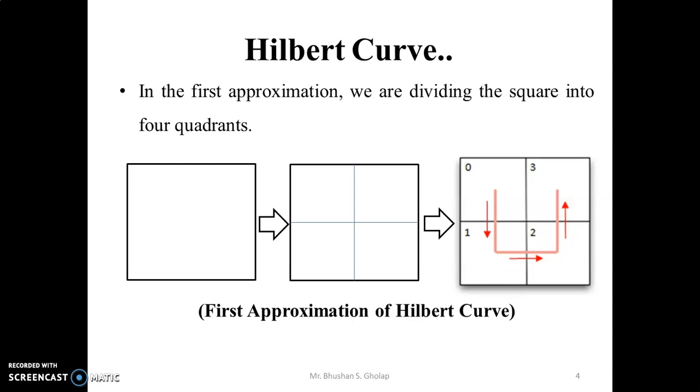Initially, the Hilbert curve is nothing but a square. And in the first approximation, we join the center point of each quadrant of the square with a U shape.